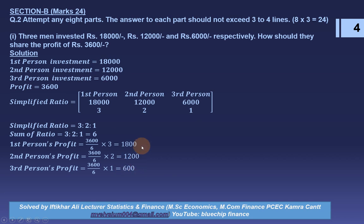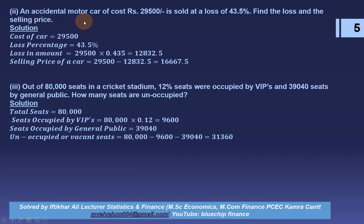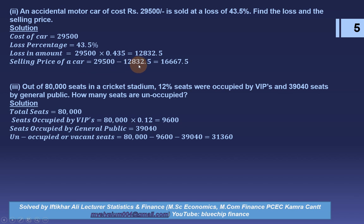Question 2: an accidental motor car of cost rupees 29,500 is sold at a loss of 43.5%. Find the loss and the selling price. Cost of the car is 29,500. Loss in amount = 29,500 × 0.435 = rupees 12,832.50. Selling price = 29,500 − 12,832.50 = rupees 16,667.50.